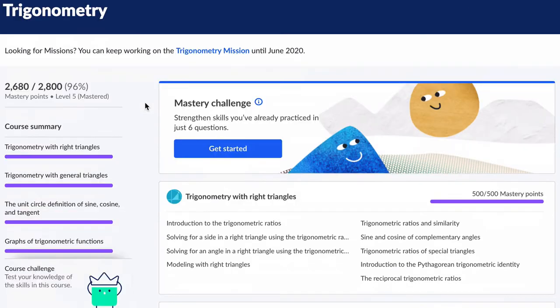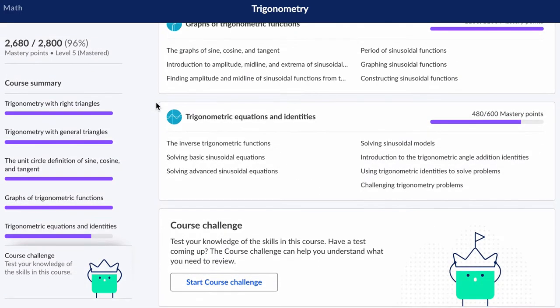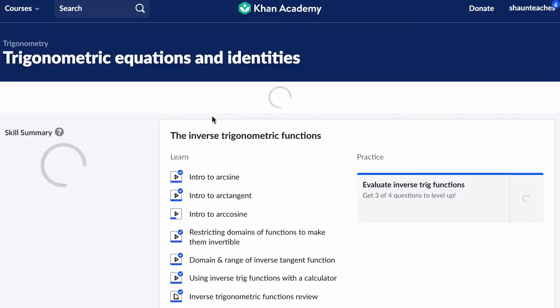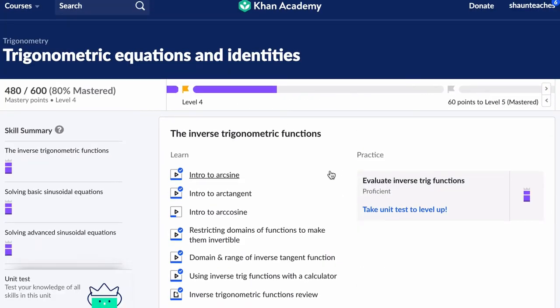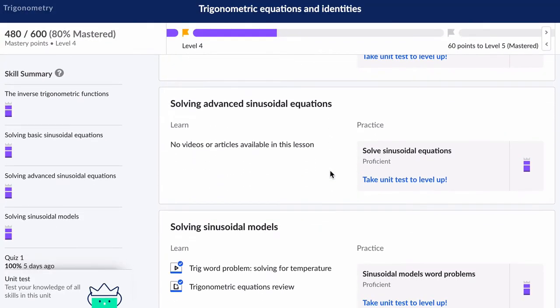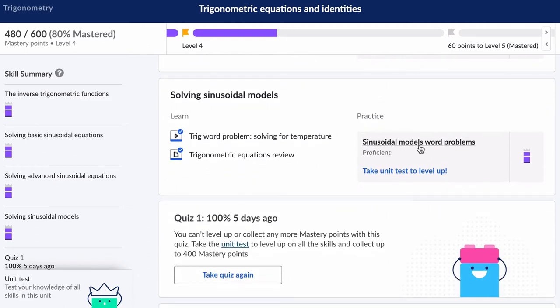Hello, welcome. We're looking at Khan Academy and Trigonometry, specifically the Equations and Identities section. I'm scrolling down towards word problems here, sinusoidal word problems, and we'll look at two examples.